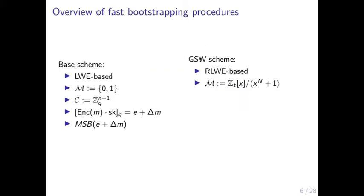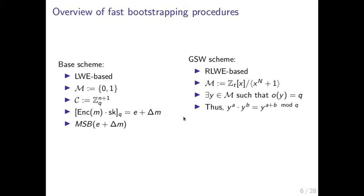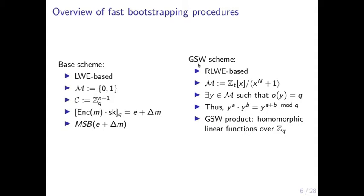The scheme we use to bootstrap the base scheme is the GSW scheme, because noise grows slowly with this scheme. The message space of GSW is actually a ring of polynomials. What we do is select an element y which is a power of x such that the order of y equals q in this ring. Because the order is q, when we multiply two powers of y we are actually adding the exponents mod q. This means we can use the homomorphic multiplication of GSW to compute linear functions in the exponent of y — in particular, the first linear step of decryption.